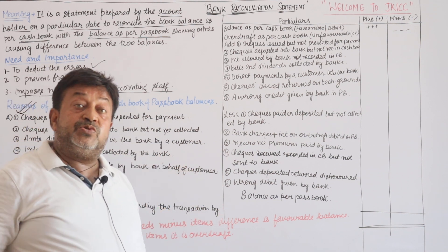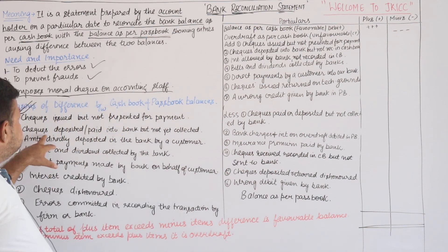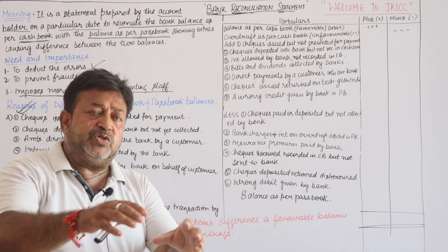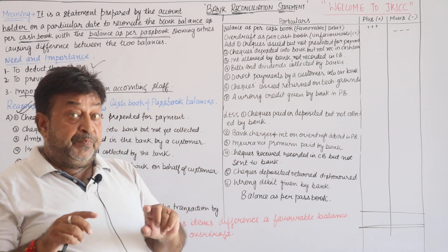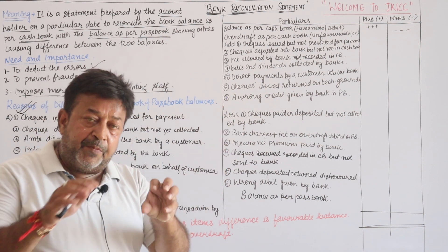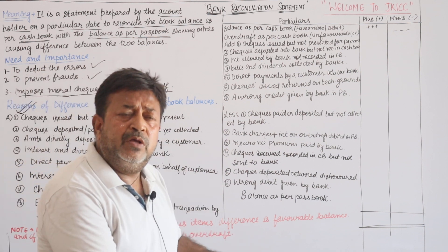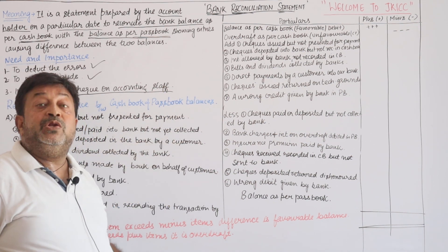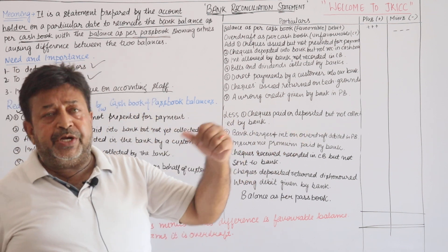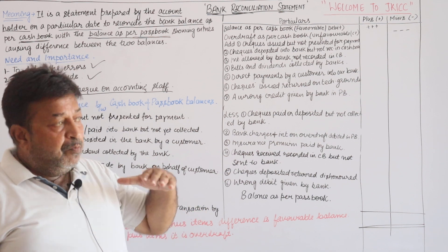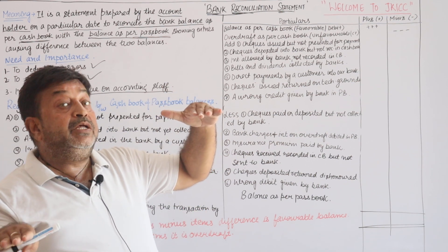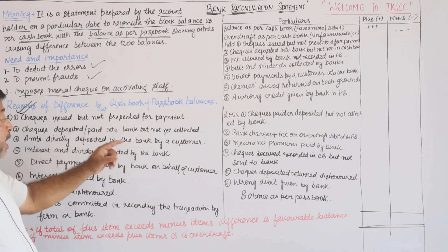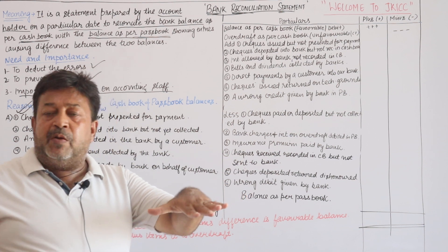So my cash book balance would be less, but because that check has not been presented to the bank, the bank balance would be higher — so the balances won't agree. Second reason: checks deposited or paid into bank. I have received a check from someone and deposited it in the bank, so I have increased my cash book balance. But the bank has not collected that money yet — it takes a week or ten days for outstation checks. So I have added it but the bank hasn't collected it, causing disagreement.